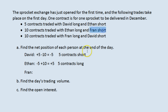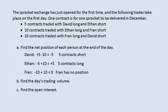Fran in one trade is ten contracts short, and then in the next trade is ten contracts long — that nets to zero. So Fran has no net position; she has no contracts and is no longer in this market at all. Fran is not ten contracts short and ten contracts long at the end of the day. If you take a position ten contracts short and then take the opposite position ten contracts long, you've closed your position — that's how you get out of the market. So Fran now has no position.